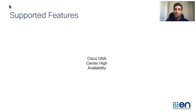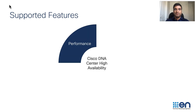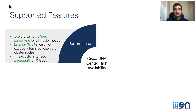Let's now go through the supported features in high availability. To configure Cisco DNA Center with high availability, connect all the three cluster nodes to a layer two private network and ensure that the latency does not exceed 10 milliseconds round-trip time. All the three cluster nodes communicate through the intra-cluster interface with a bandwidth of 10 gigabits per second.